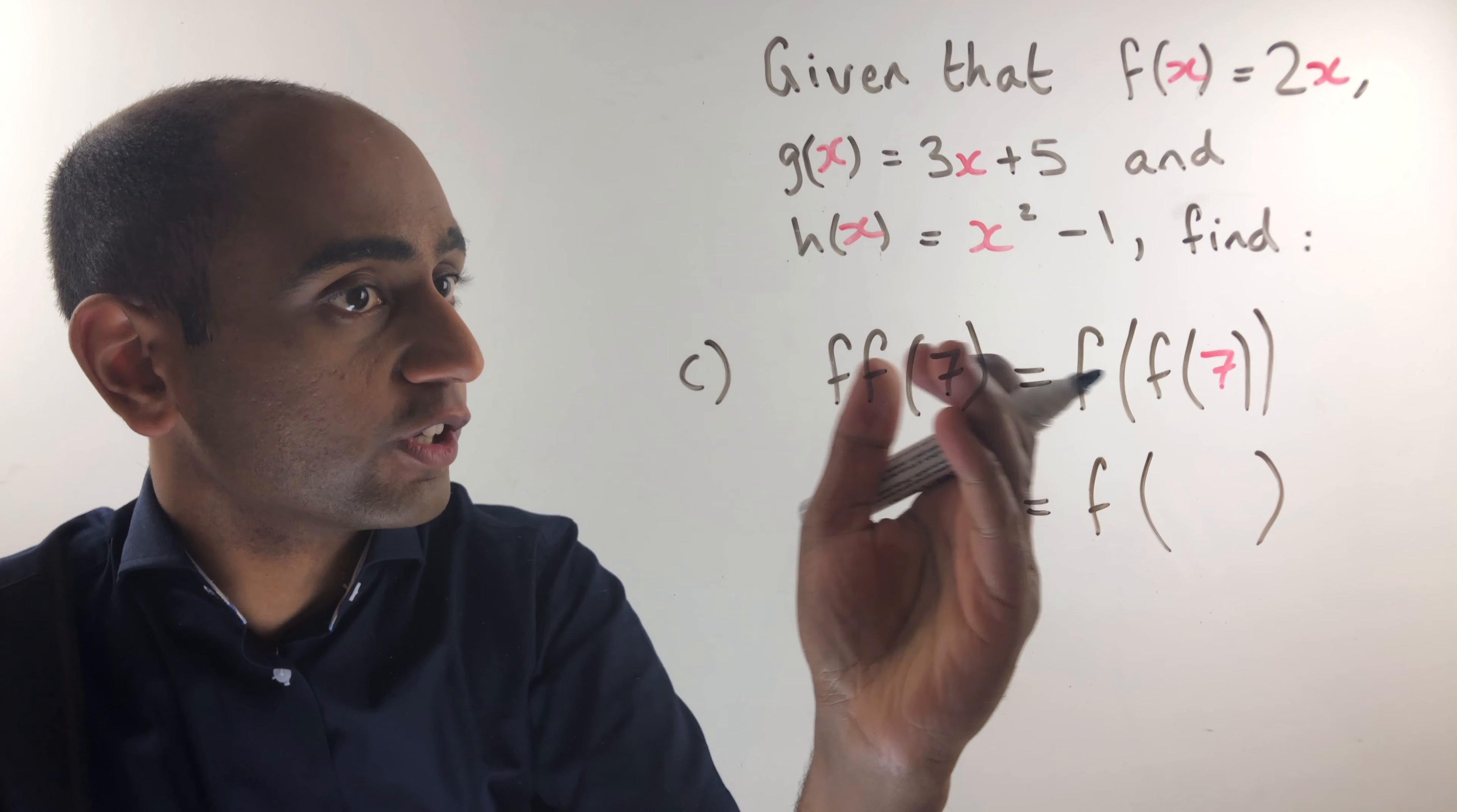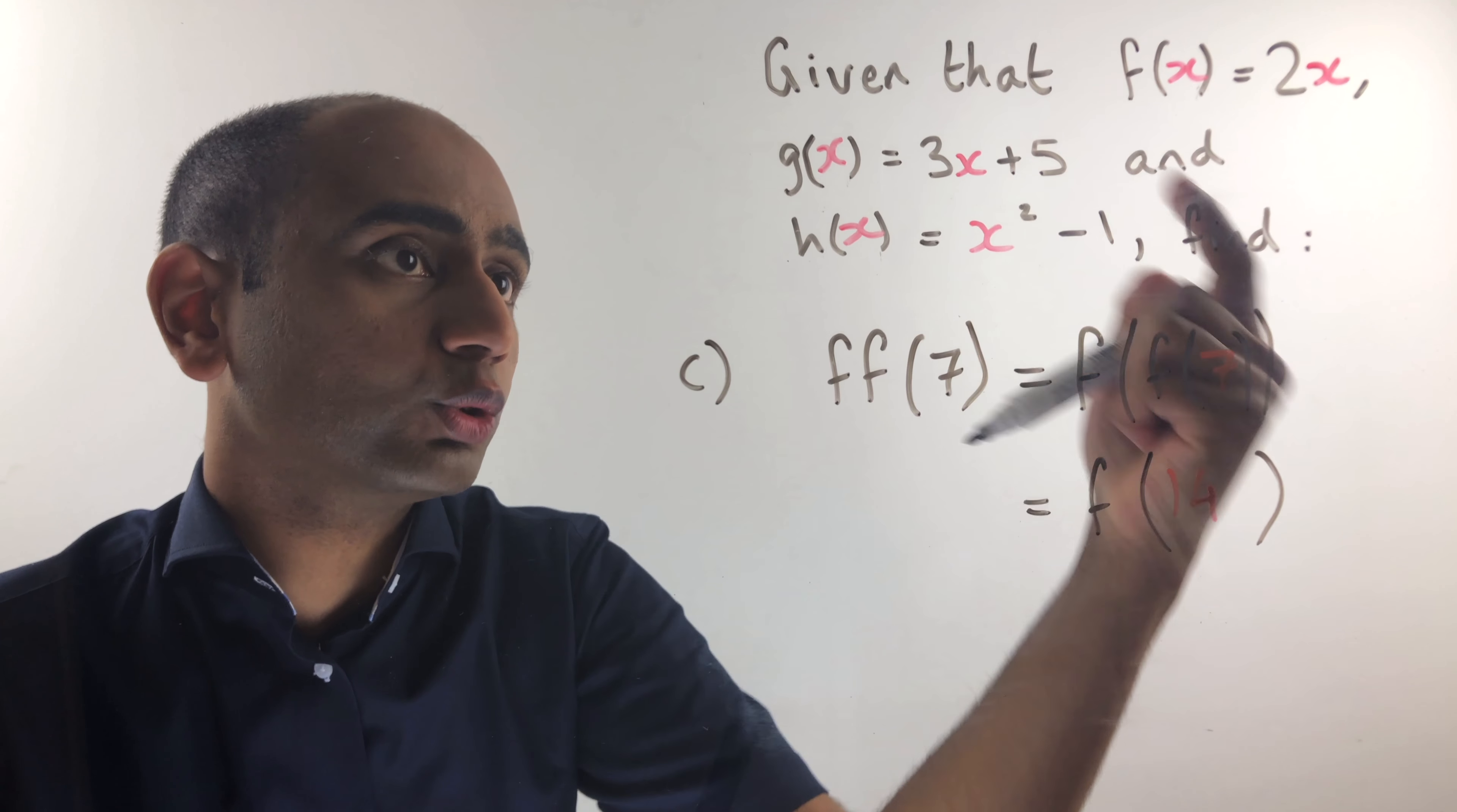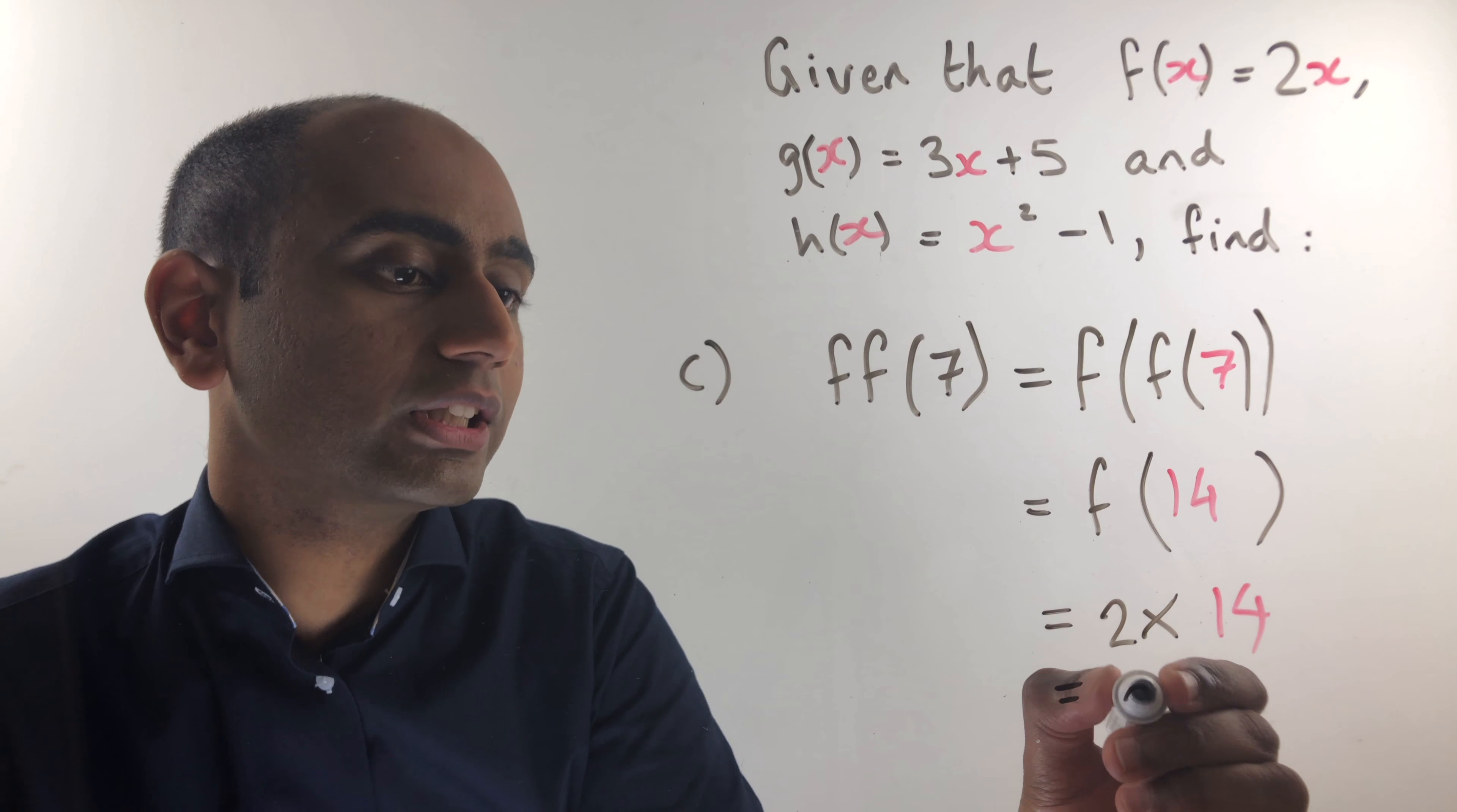Now we do 14 into the function f. f of 14 would be 2 lots of 14. And that's simply going to be 28.